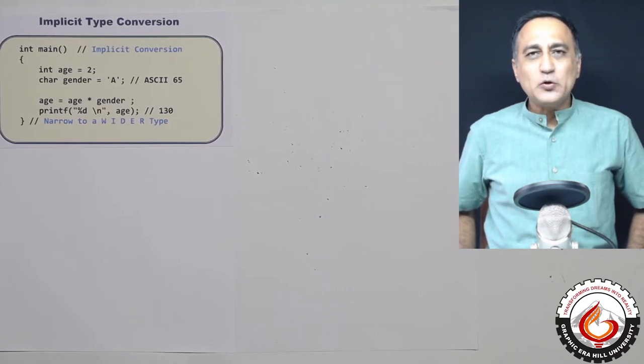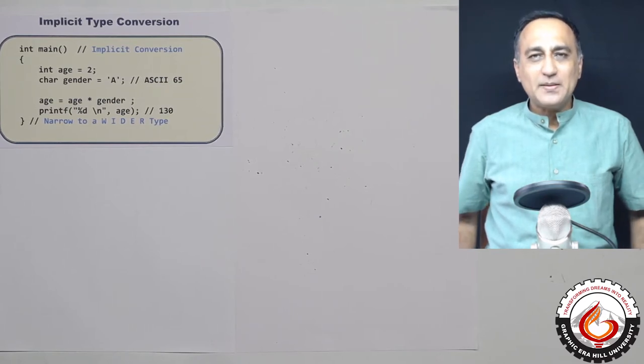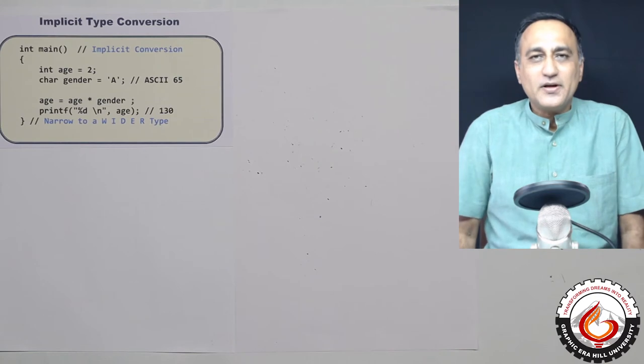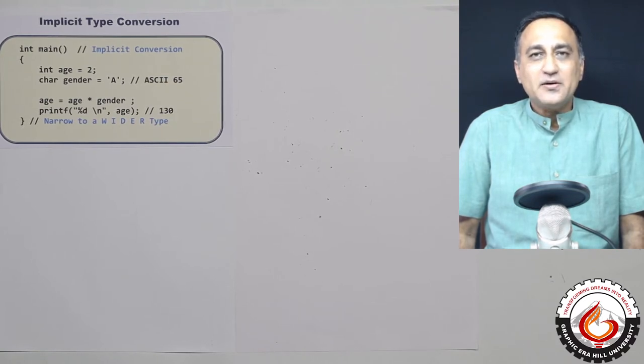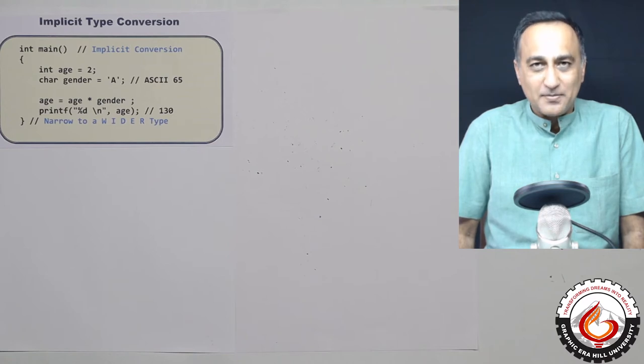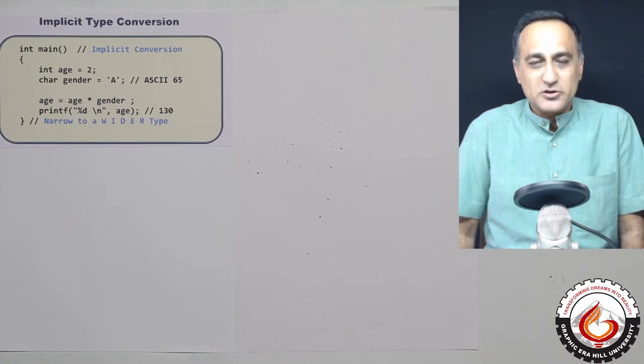Now if you decide to multiply these two, that is i into j, one is of the type integer and the other is of the type real number or a floating point number. So in order to multiply numbers, it is important that both of the numbers be of the same data type. Otherwise, multiplication is not possible.